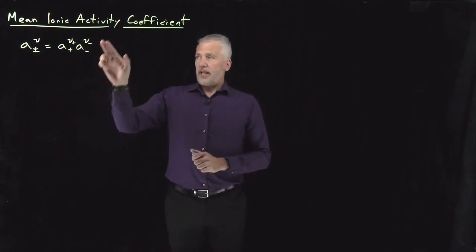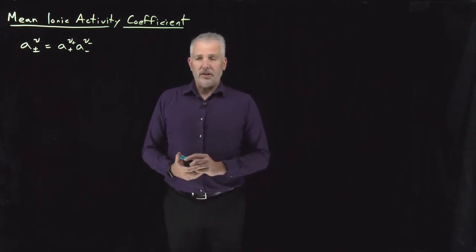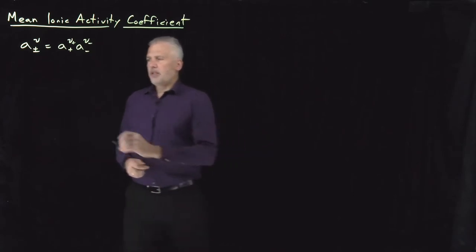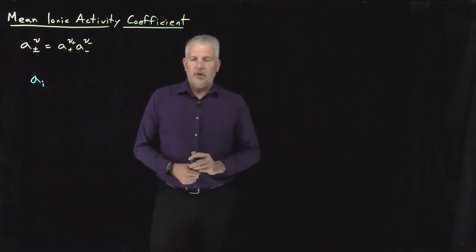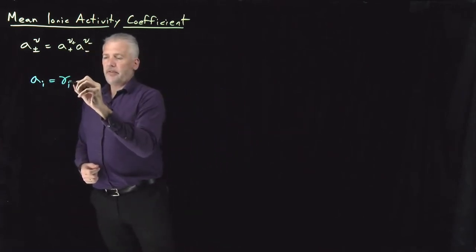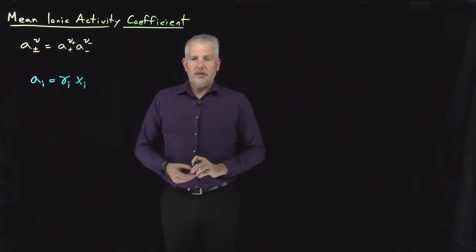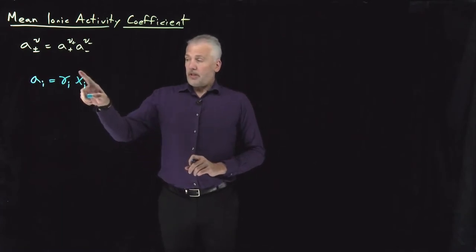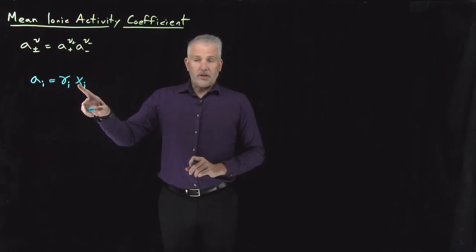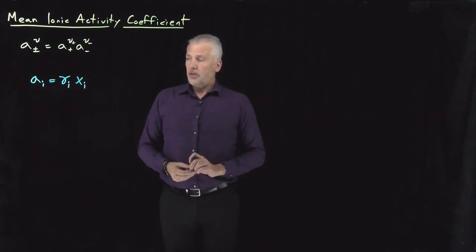That raises the question not just of activity, but how do we think about the activity coefficient for an electrolytic solution as well. Let's remind ourselves what we know about activity coefficients. The activity of a particular component of a solution can be thought of as the activity coefficient times the mole fraction, depending on what standard state we're using. If our standard state is the pure liquid or pure substance, then a mole fraction of one is the standard state.